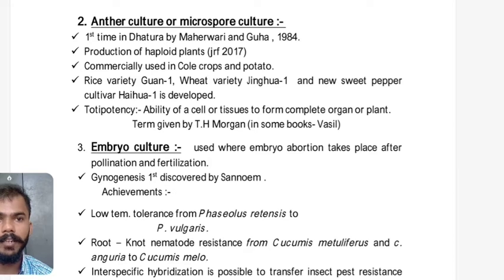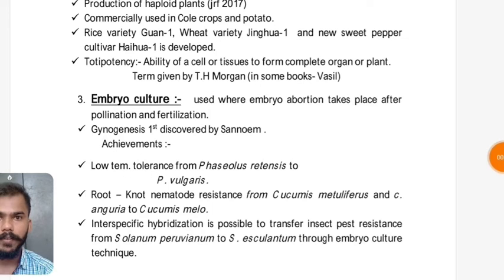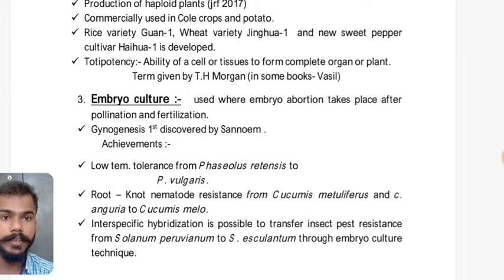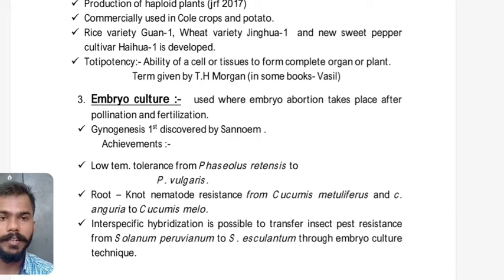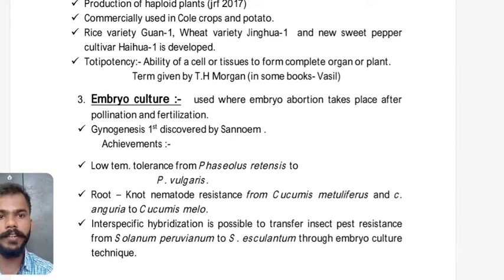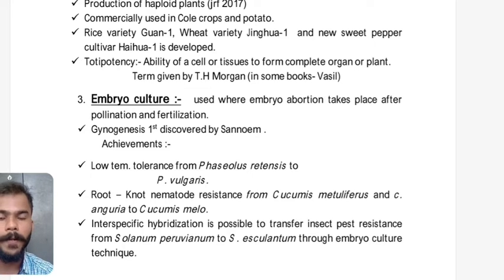Totipotency is the ability of a cell or tissue to form a complete organ or plant. The term was given by T.H. Morgan (Thomas Hunt Morgan); in some books the name given is Haberlandt or Vasil.